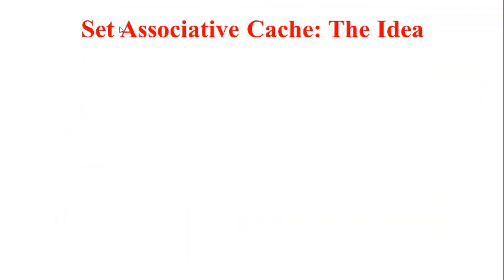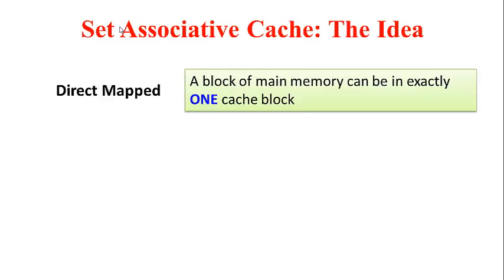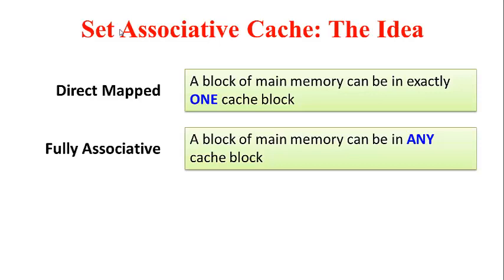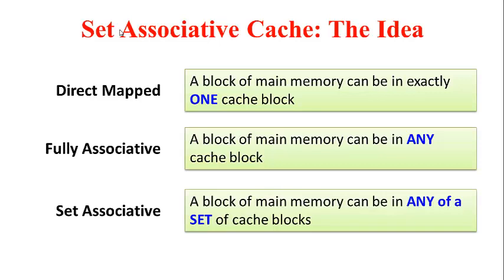Here is the next neat idea: we are going to use what is known as set associativity. In direct-map, one block of main memory maps to exactly one cache block. In fully associative, a block of main memory can reside in any cache block. With set associativity, we take a middle path — a block of main memory can now be in any block within a particular set of cache blocks.